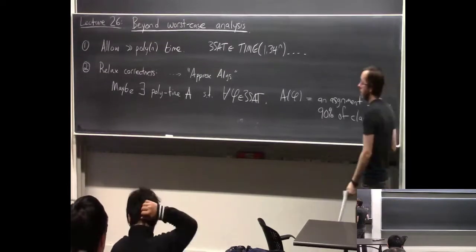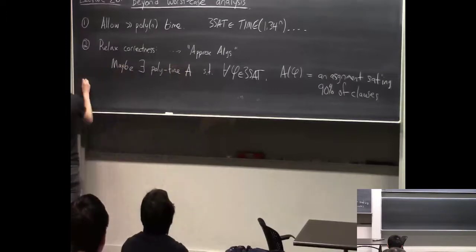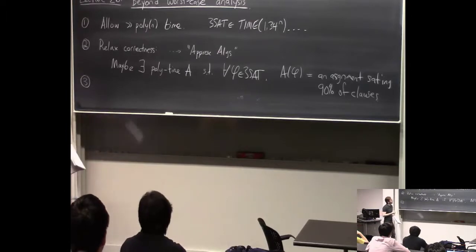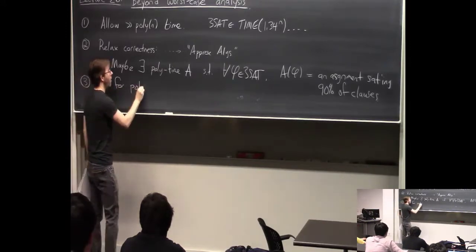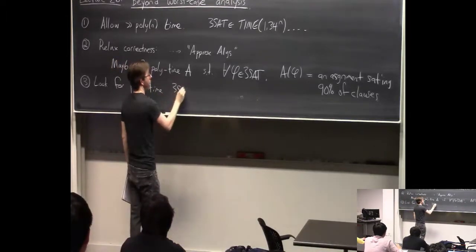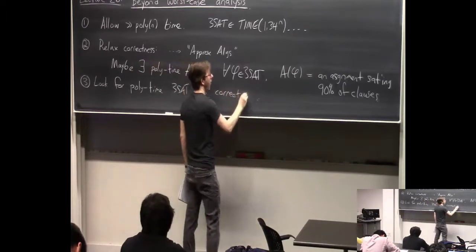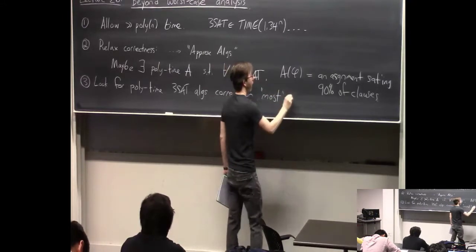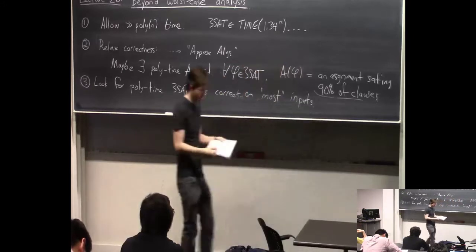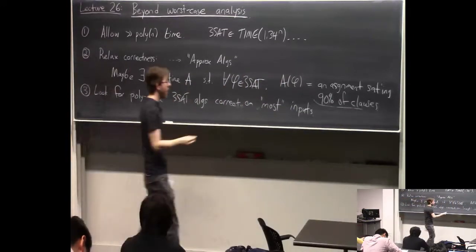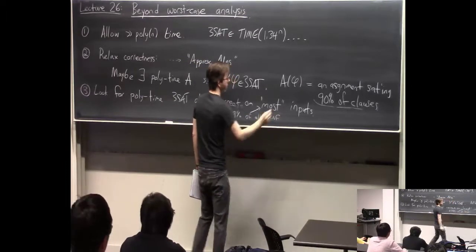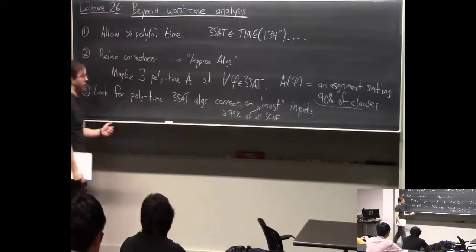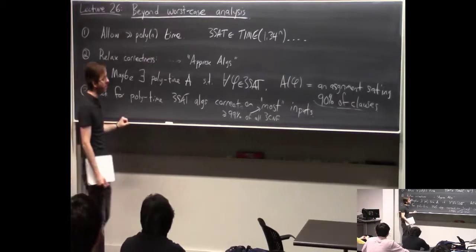A third thing you might do is keep polynomial time and keep correctness, but relax your goal to have a correct answer on all inputs. So maybe you could try to find poly-time 3SAT algorithms that are correct on most inputs. Here you have to figure out what you mean by 'most' — for example, maybe 'most' means at least 99% of all 3CNF formulas. That may or may not make you happy — if your 3CNF happens to be one that's not in the 99%, it could be sad.